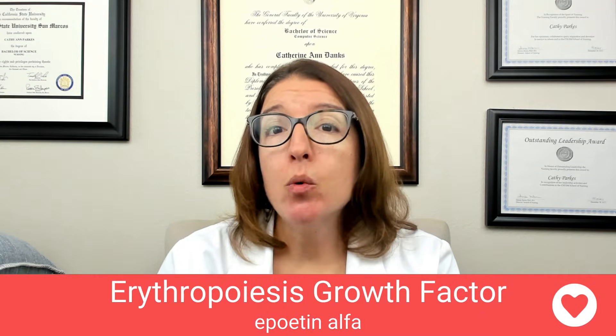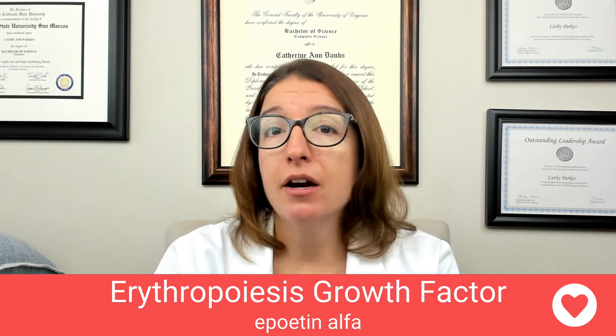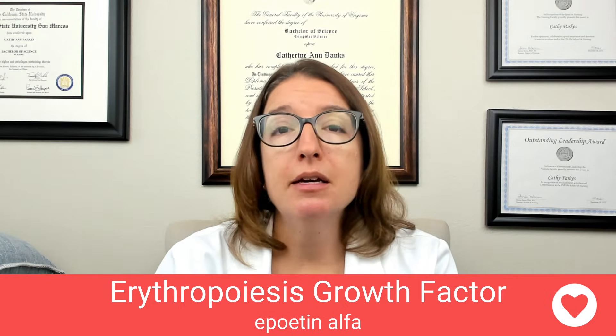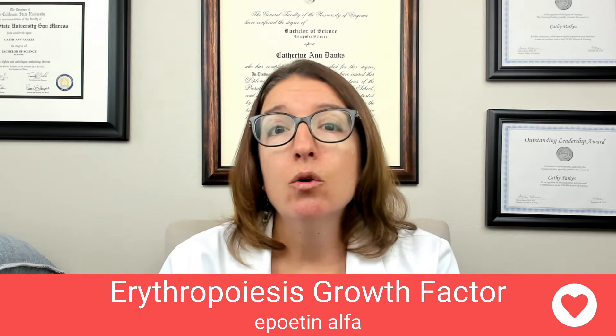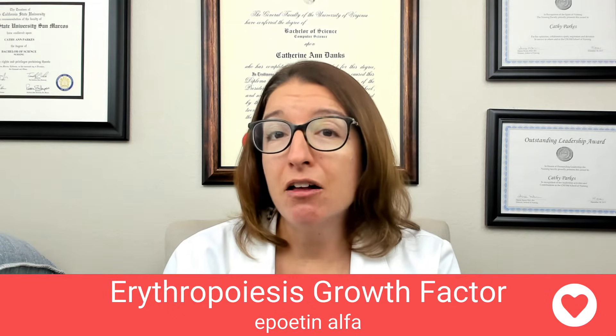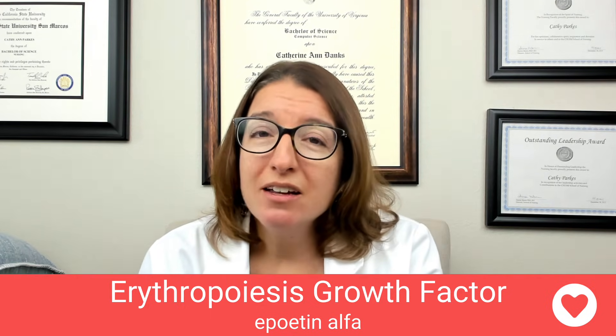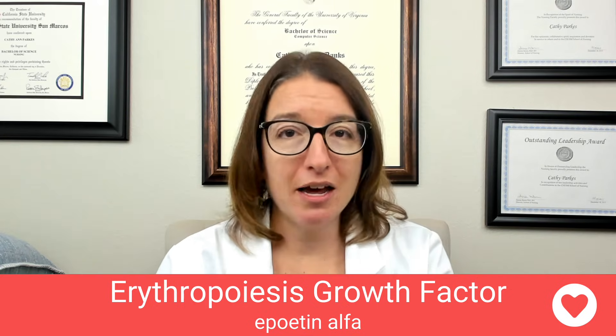Now let's talk about an important erythropoiesis growth factor: epoetin alpha. Epoetin alpha is used to treat anemia in patients who have chronic kidney disease, HIV, or who are undergoing chemotherapy — any condition that results in anemia. It works by stimulating the bone marrow to increase production of red blood cells. The way I remember this: taking epoetin alpha will help fix your anemia so you can grow up to be a strong alpha male. If you have anemia, you feel tired and weak, so epoetin alpha helps fix that anemia.